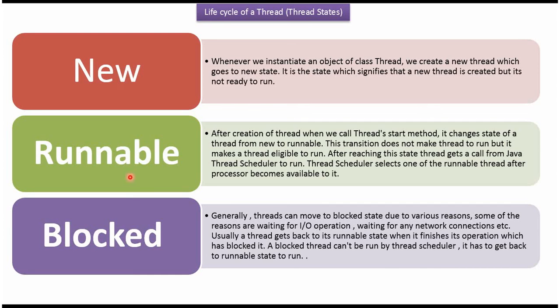After creation of a thread, when we call the start method of a thread, it changes the state of a thread from new to runnable. This transition does not make the thread run, but it makes the thread eligible to run. After reaching this state, the thread gets called from the thread scheduler to run. The thread scheduler selects one of the runnable threads after the processor becomes available to it.